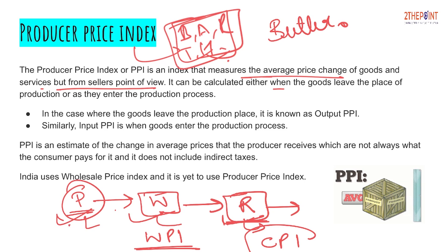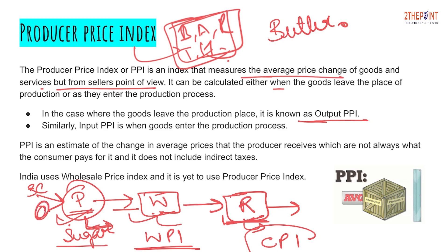PPI can be calculated either when the goods leave the place of production — that is, when goods are dispatched from the factory to the wholesaler — or when the raw materials enter the place of production. For example, in a sugar-producing factory, PPI will be calculated either when the sugar is made and transferred to the wholesaler, or when the sugarcane enters the factory for processing. When calculated at the output stage it is called Output PPI, and when calculated at the input stage it is called Input PPI.